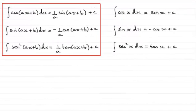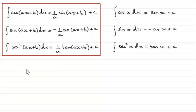In this tutorial I want to show you how we can integrate cos(ax + b), sin(ax + b), and sec²(ax + b) with respect to x, where a and b are constants — things like cos(5x + 2), sin(2x − 3) and so on. I also want to show you the similarity these have to integrals we should already be familiar with.